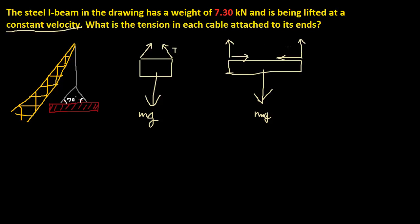Since acceleration is zero, the net force is zero — there's no external force other than gravity. That means the downward force, which is 7.3 kilonewtons — or 7300 newtons — must equal the total upward force from the cables.